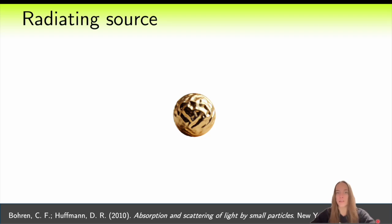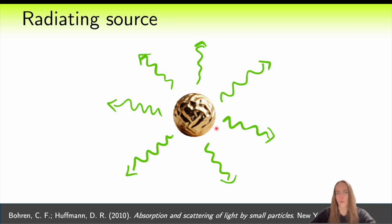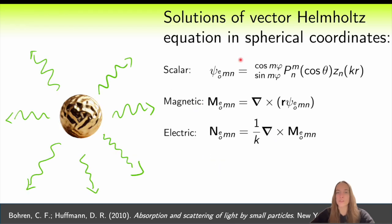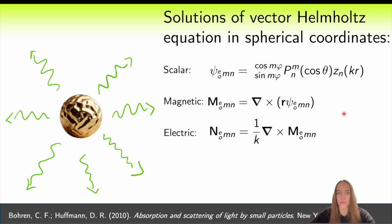Let's imagine we have a light-emitting source, such as a scatterer or resonator — for example, here we have a gold nanoparticle. It emits waves in all directions, and for such problems it is very convenient to choose the basis of solutions to the Helmholtz equation in spherical coordinates. These solutions have the following form and are called vector spherical harmonics, or multipoles.